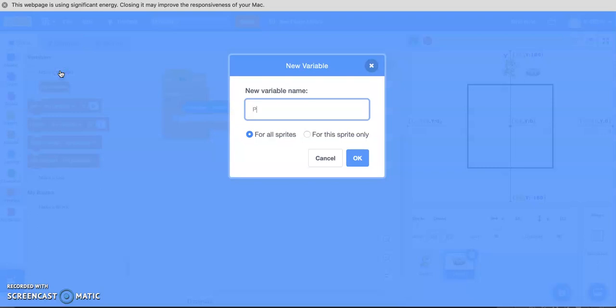We're gonna call this points. We're gonna leave it for all sprites. So all sprites will have access to this variable.